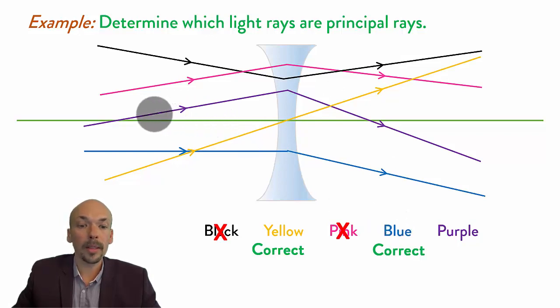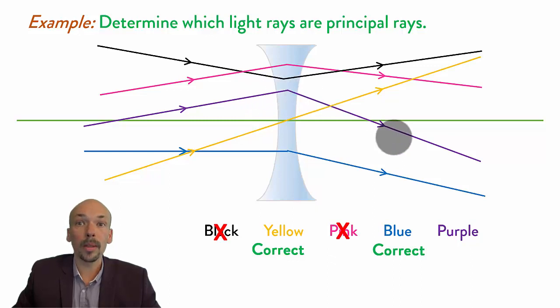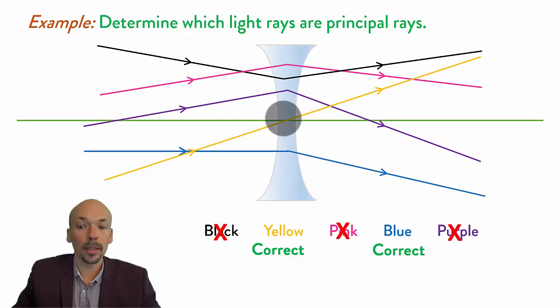And finally, the purple one doesn't come in parallel to the principal axis. It doesn't go out parallel to the principal axis. It doesn't go through the optical center. So it's not a principal ray.